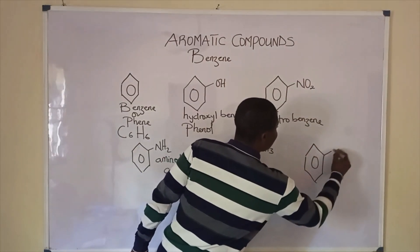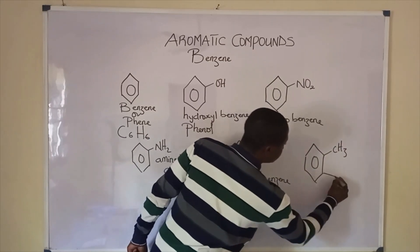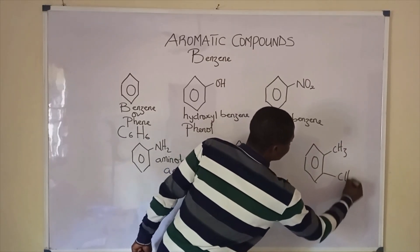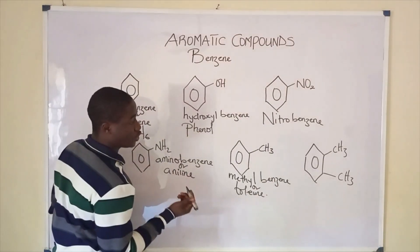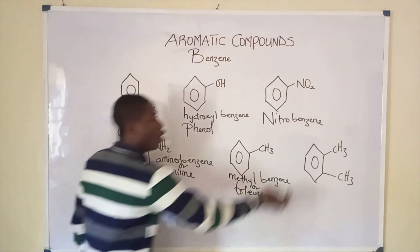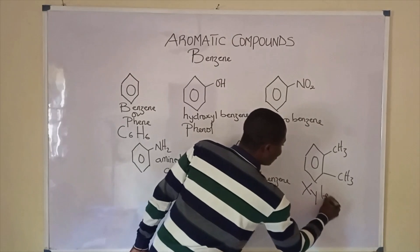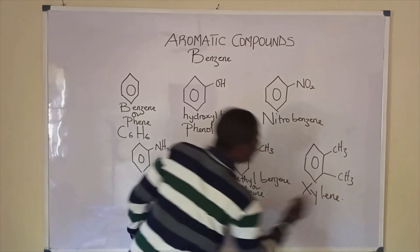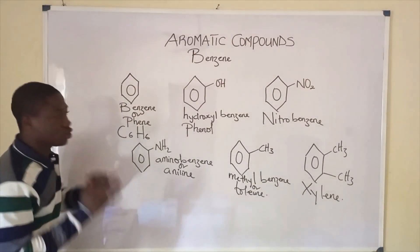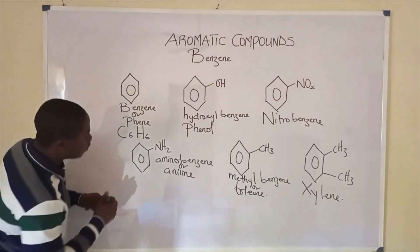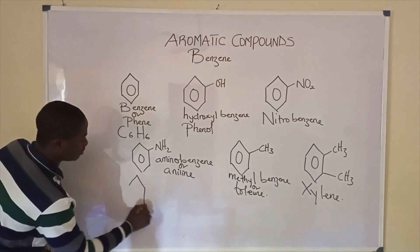In this case, we have two CH3 groups on a benzene ring. This compound is called xylene.